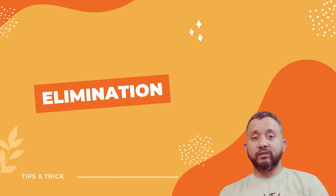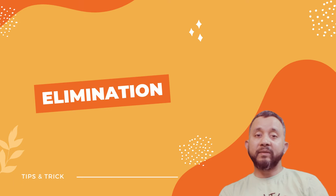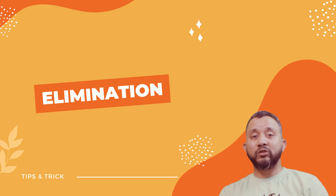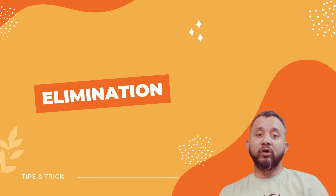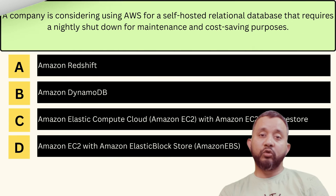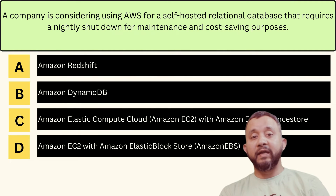Another strategy is to eliminate wrong answers. If you are not sure about the correct answer, try to eliminate the options that you know are incorrect or that don't make any sense. This can help you narrow down your choices and increase your chances of guessing correctly. Here is another question from the AWS Cloud Practitioner exam.